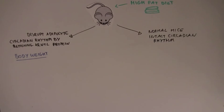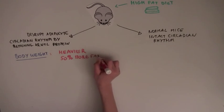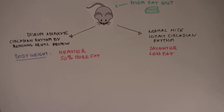So, mice that had a disrupted adipocyte circadian rhythm were heavier and had 50% more fat than normal mice. In other words, they became obese. To explain the development of obesity, the scientists looked at a variety of factors.